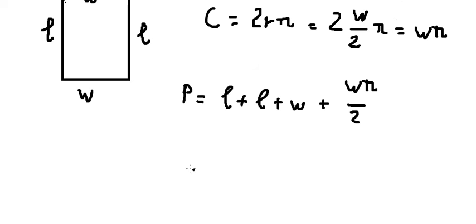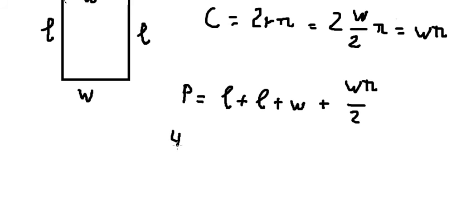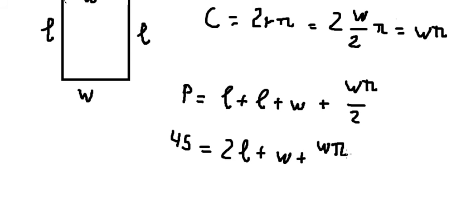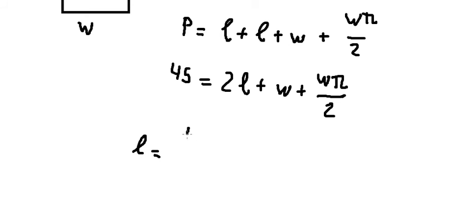We know the perimeter equals 45, so we set 2L + W + πW/2 equal to 45. We divide both sides to isolate and solve for L in terms of W.